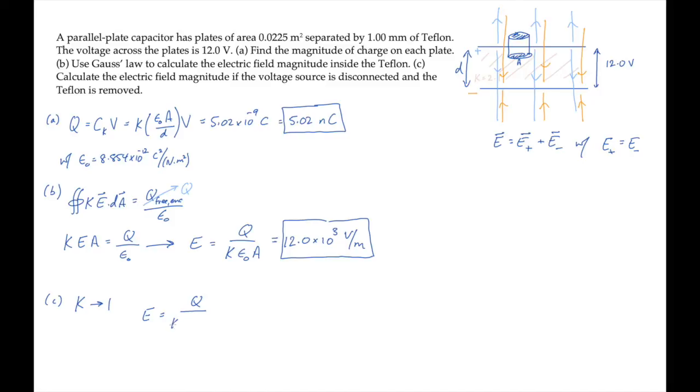The effect of this is to take our expression for the electric field from part B, and instead of dividing by 2.1, the dielectric constant for Teflon, we divide by 1, the dielectric constant for a vacuum. This means our answer here is 2.1 times the value we got in part B, which works out to 25.2 kilovolts per meter.